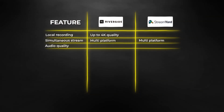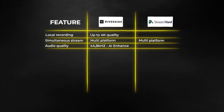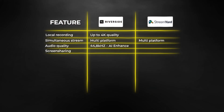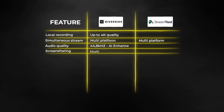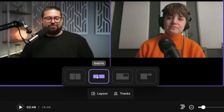When it comes to audio quality there is quite a big difference. StreamYard only allows 44.1 kilohertz audio quality, whereas Riverside does 48 kilohertz with AI enhancement built in, so you can make sure the audio is as crisp as possible. When it comes to screen shares, you can do them on both platforms, but Riverside also has amazing multi-screen layouts built in for more flexibility.